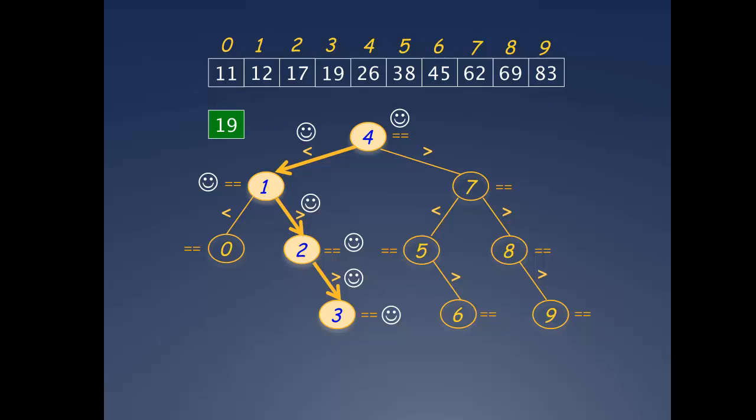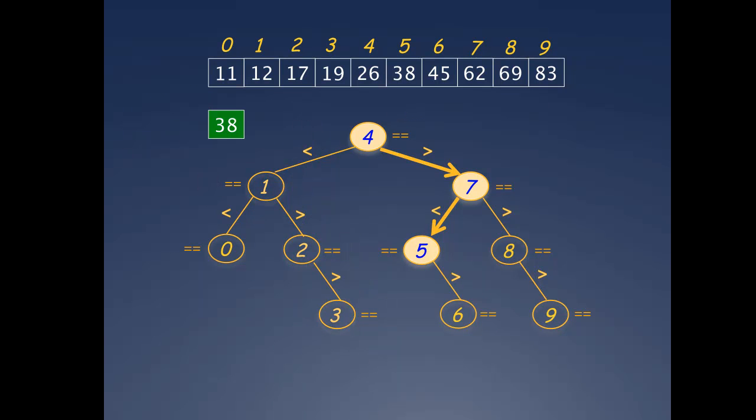And here's a trace of the search for 38 and the comparisons that amount to 5. The worst case number of comparisons for any search that finds a match is 7. This would be for the values at indices 3, 6, and 9, whose nodes in the tree are farthest from the top or root.